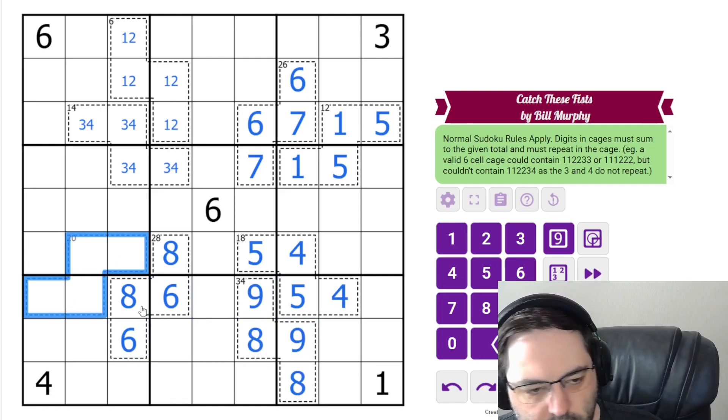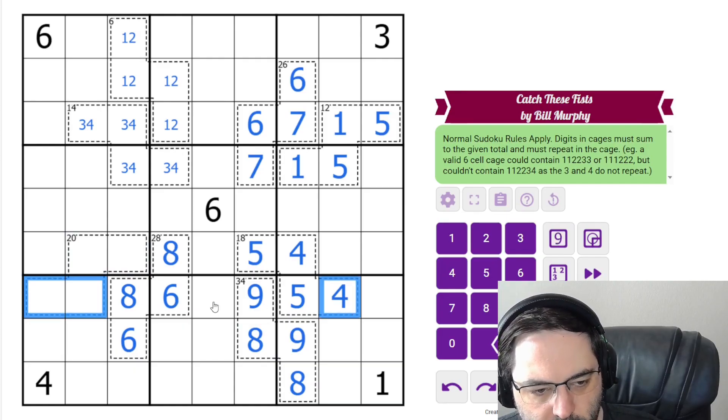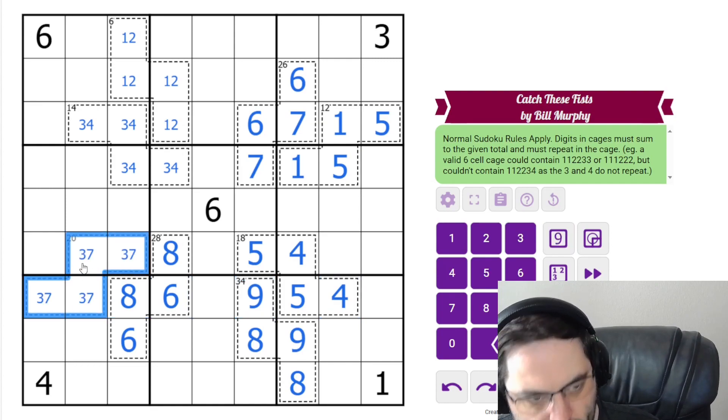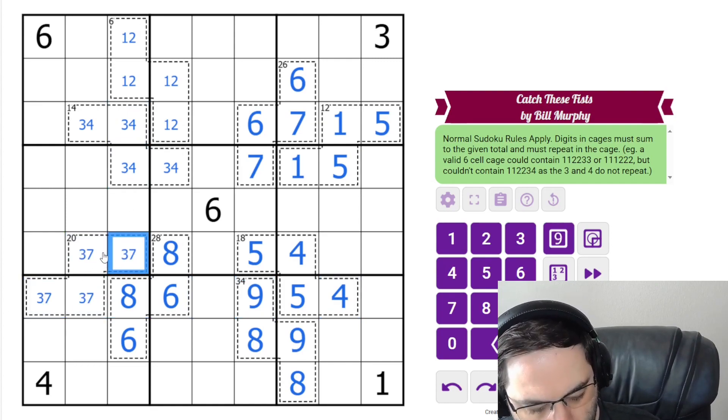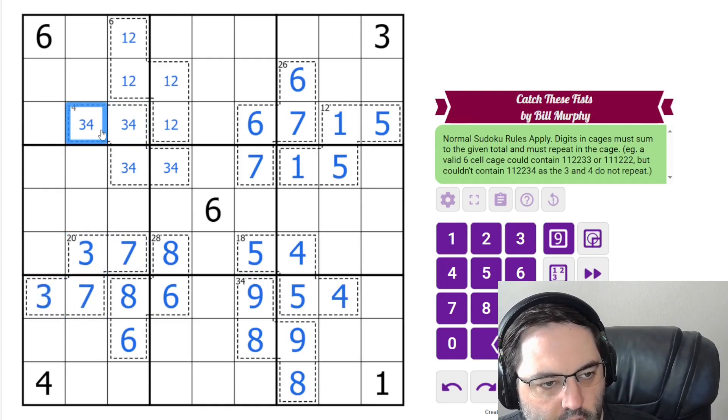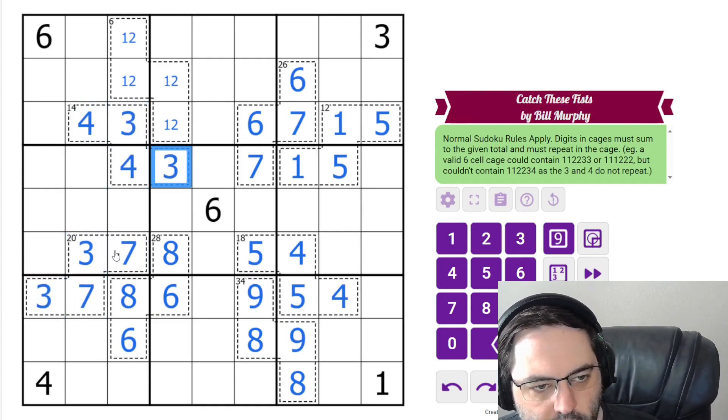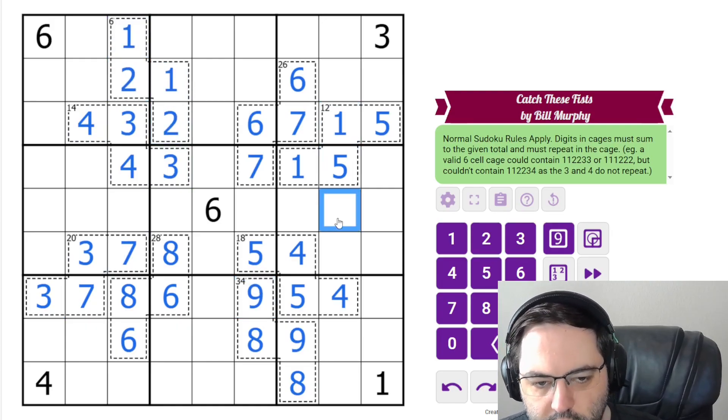And now this is much more restricted. These two cells cannot contain four, six. They can't contain two, eight. They can't contain one, nine. So the only thing left is three, seven. And the three, four here is going to resolve that. And the three will resolve that cage. And the one over here resolved the twos at once. And that's all the cages.